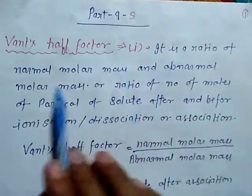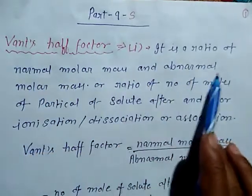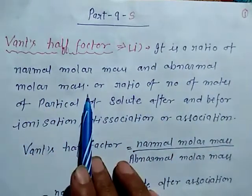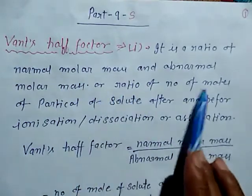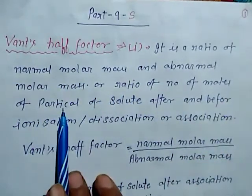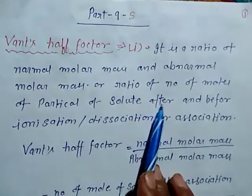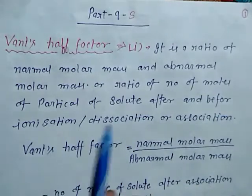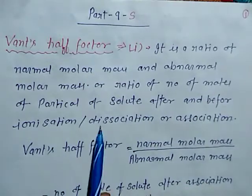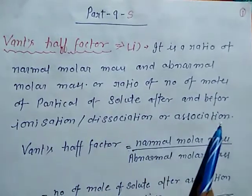The Van't Hoff factor is a ratio of the normal molar mass and abnormal molar mass, or the ratio of number of moles of particles of solute after and before ionization, dissociation, or association.